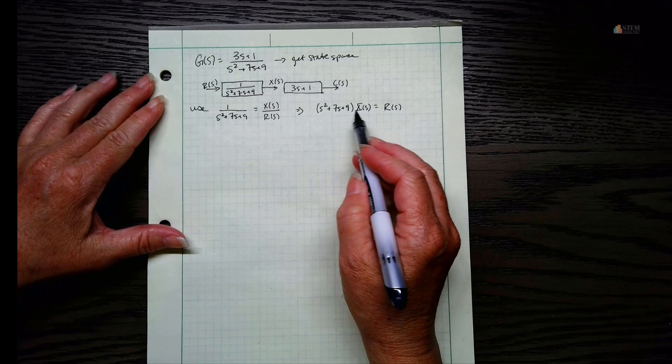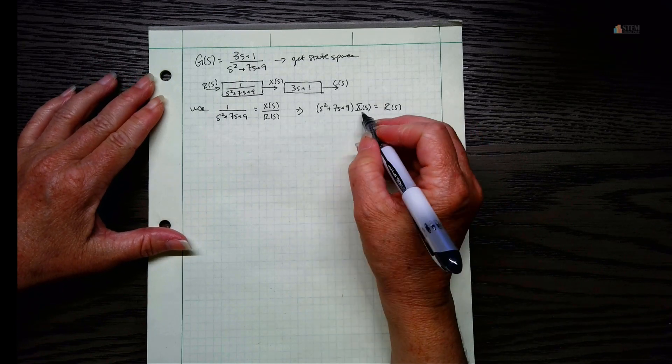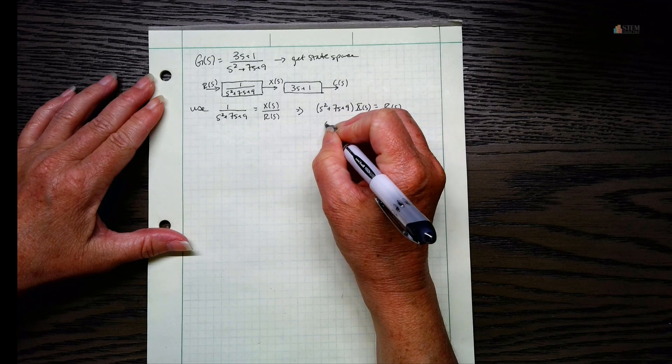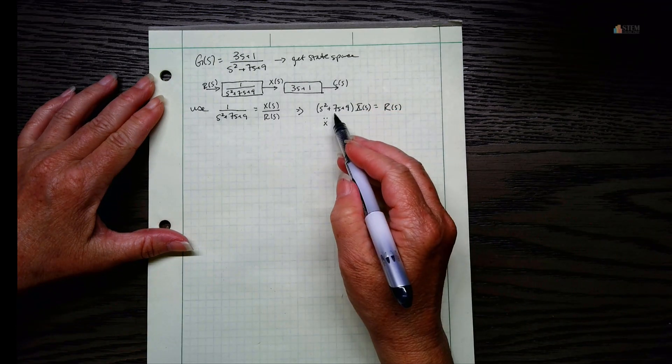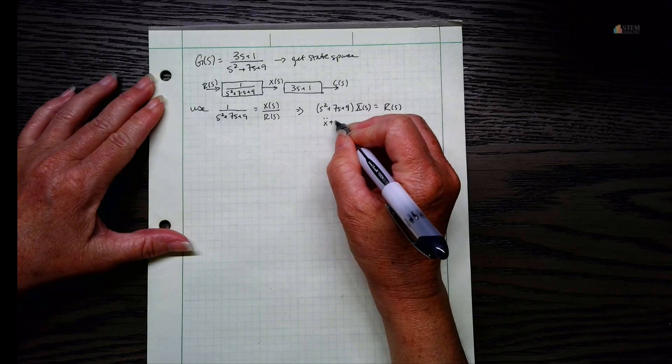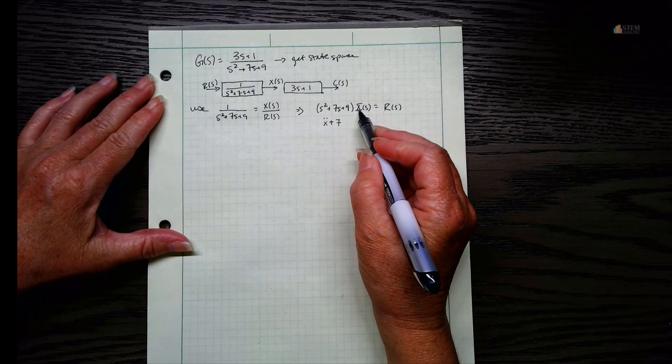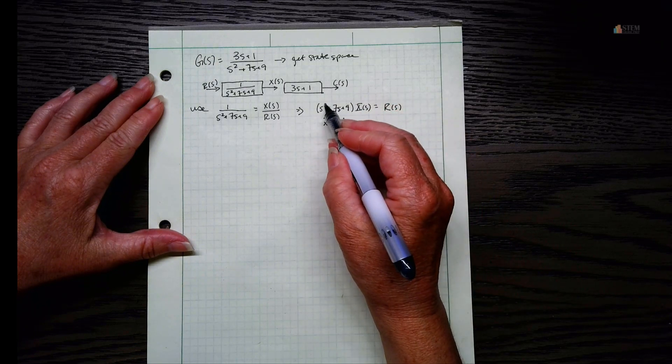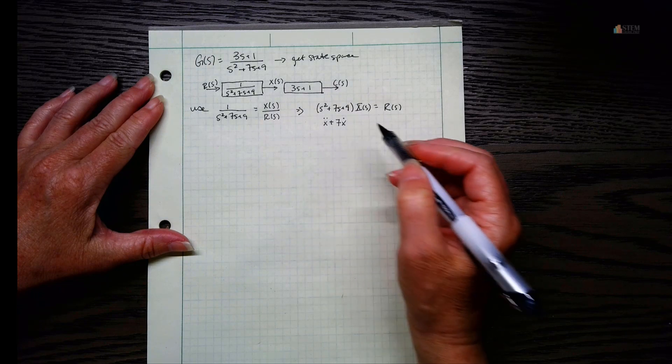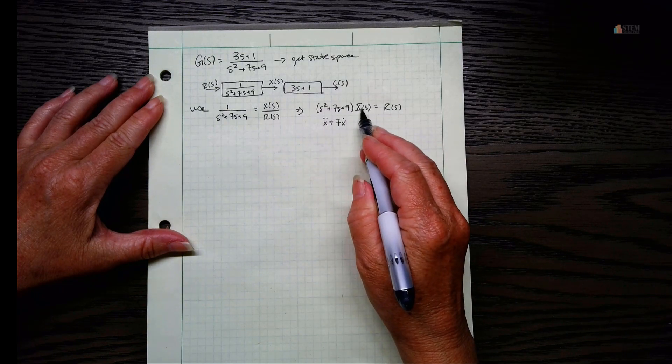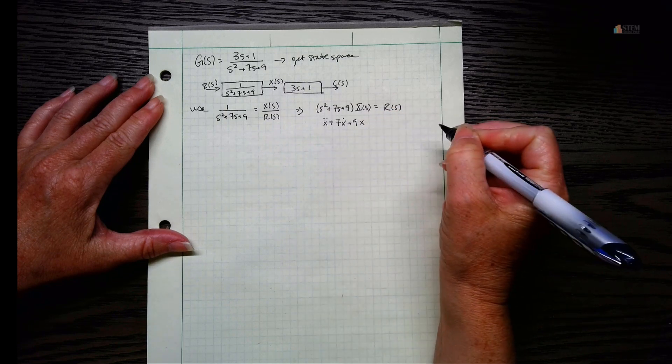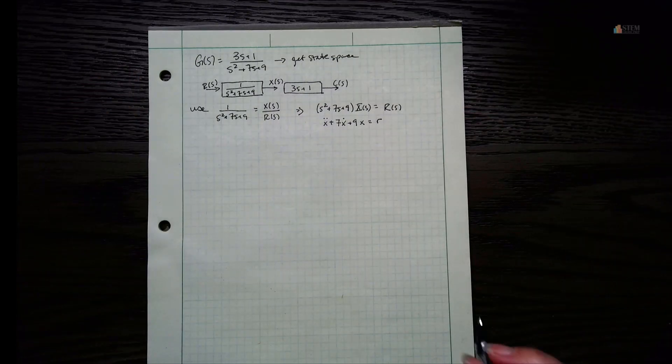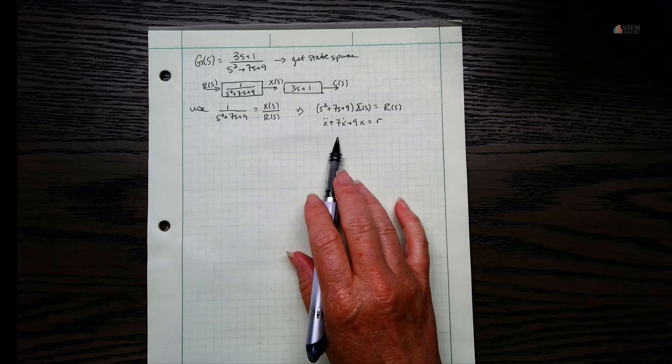Remember these capital letters mean we've taken the Laplace transform of X of T and R of T. Now, using the differentiation theorem, essentially we know that if we have S squared times this Laplace of X, that can be rewritten as X double dot. This one right here, we've got plus seven, and then we've got S times X of S, so that means we've got X dot there. Because the exponent on the S tells you the order of the derivative. And then here we've got nine X of S, so that's just going to be plus nine X. And then over here we're just going to have R.